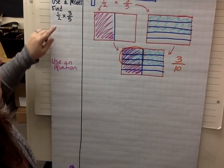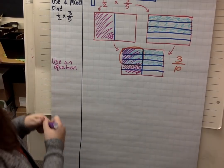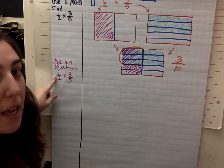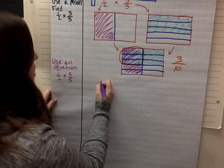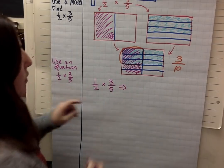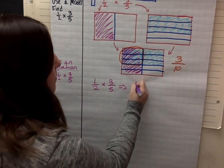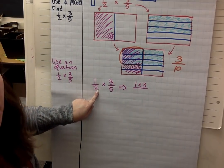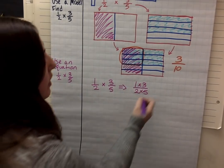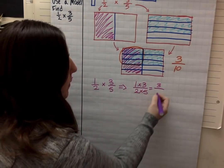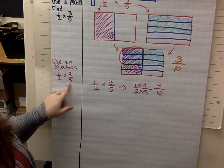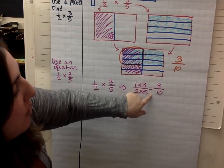Let's use the same exact problem, but this time we're going to use an equation to solve it. So 1 half times 3 fifths. When using an equation, what we're going to do is multiply the numerators and then multiply the denominators. So I multiply 1 times 3 for the numerators, and 2 times 5 for the denominators. 1 times 3 is 3, and 2 times 5 is 10. So I got the same answer — 3 tenths — whether I used the area model or the equation.